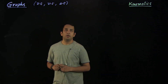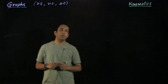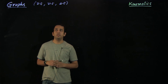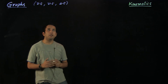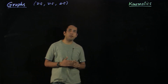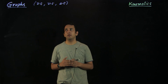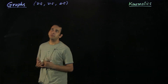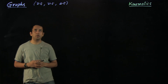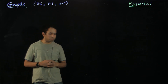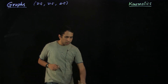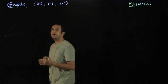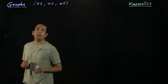Hello friends. In this video for the chapter kinematics, we will be going through some basic graphs which are position-time, velocity-time, and acceleration-time. We will also cover how to interpret different information from the different graphs which are given to us in different problems. So let us start with what we mean by xt, vt, and at graphs.